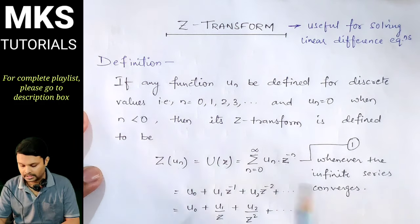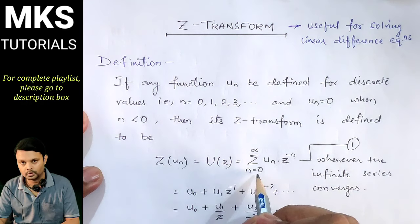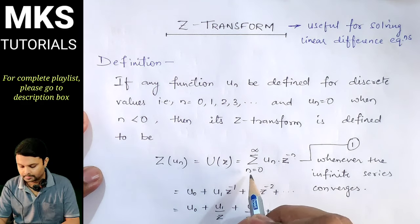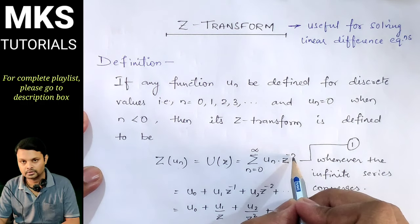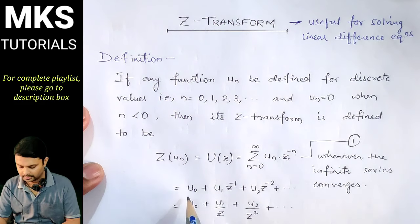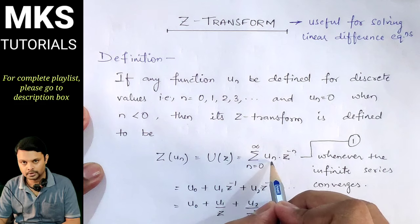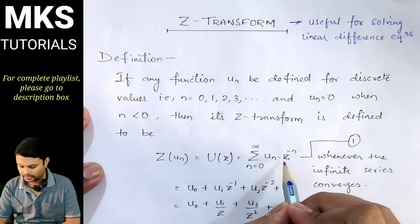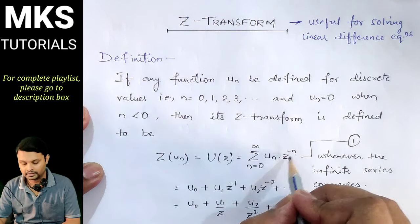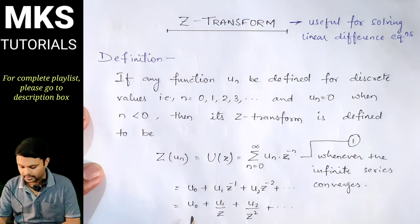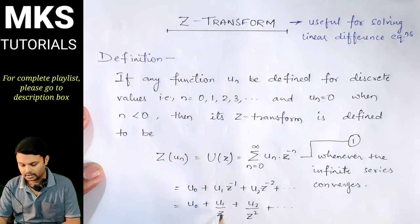Let this be equation number 1. Now, we will put n equal to 0, 1, 2, 3, 4. When you put n equal to 0, z to the power 0 is equal to 1. When n equals 1, you get u(1) into z to the power minus 1. When n equals 2, this becomes u(2) into z to the power minus 2, and so on. So we get U(z) equal to u(0) plus u(1) upon z, plus u(2) upon z squared, plus dot dot dot.